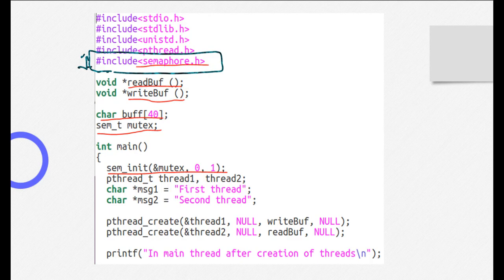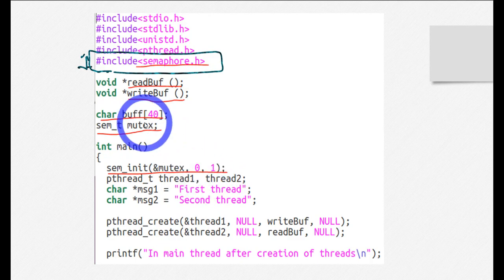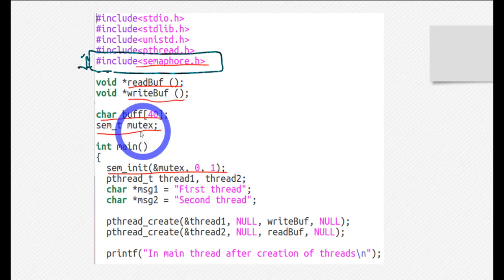The second step was to declare the semaphore variable in a place which is accessible by all the processes or threads. Since in this example we are performing synchronization between two threads, the place which is common or accessible by all the threads is a global variable. A global variable is actually accessible by all the threads of a process.